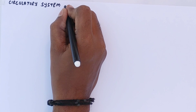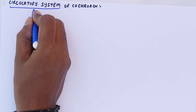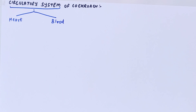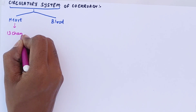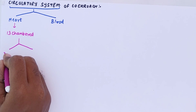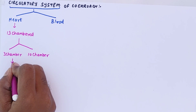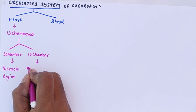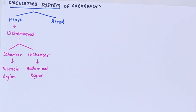Whenever we talk about the circulatory system of cockroach, we need to understand it consists of two components: one is the heart and second is the blood. As far as the heart is concerned, in cockroach there are 13 chambers — a 13-chambered heart divided into two parts: a 3-chambered heart in the thoracic region and a 10-chambered heart in the abdominal region.